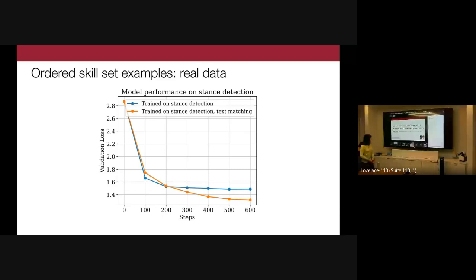Q: I assume you're not repeating data — not doing a full epoch of stance detection? A: Correct, we're not repeating data. These results are averaged over five random seeds and we consistently see this behavior. For the synthetics we also measured accuracy and found a clean translation between validation loss going down and accuracy improving.